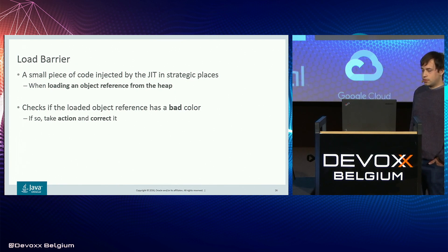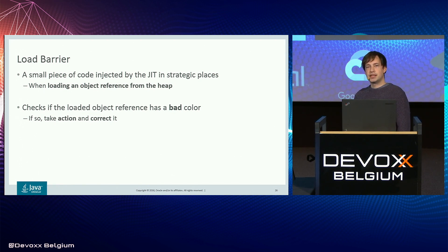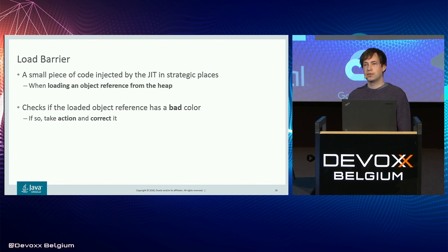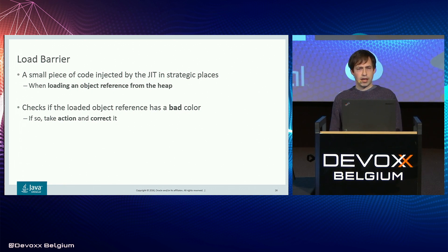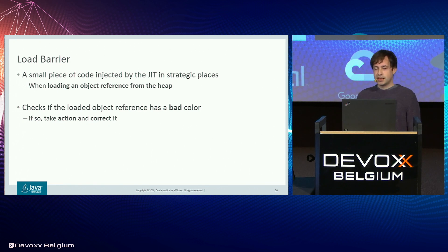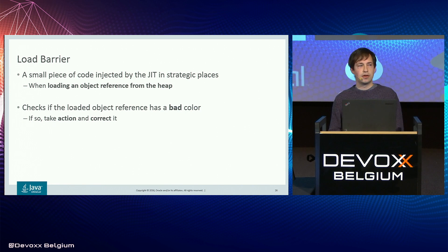To detect wrong things with these colored pointers, we use something called load barriers. A barrier is a small piece of machine code that we insert into logical operations from your Java application, such as loads and stores. Almost all collectors use write barriers for bookkeeping, but in ZGC we use load barriers. In these load barriers we check if the pointers have the wrong color, and if they do, we paint them the right color, stick them back in, and take whatever action is required to fix up that color.